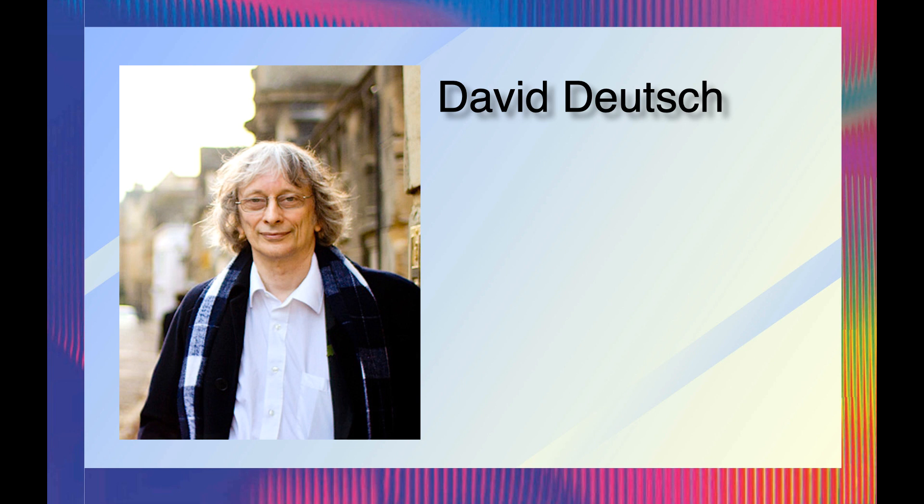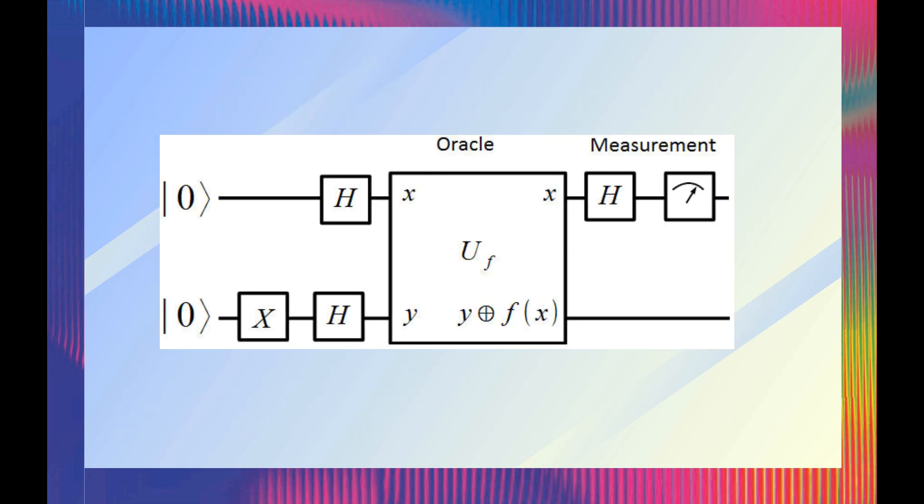David Deutsch, visiting Wheeler in the early 1980s, became convinced that the many worlds interpretation of quantum physics held the key to paradoxes in the theory of quantum information. It took only a couple of years for Deutsch to find what he was looking for: a simple quantum algorithm that yielded twice as much information as was possible if there were no parallel universes. This is now the famous Deutsch algorithm, the first quantum algorithm of quantum computing.